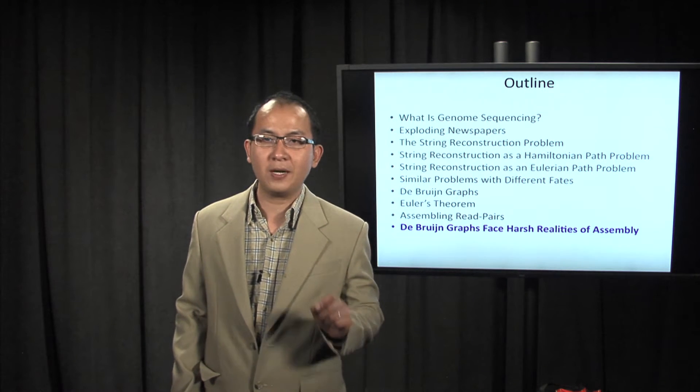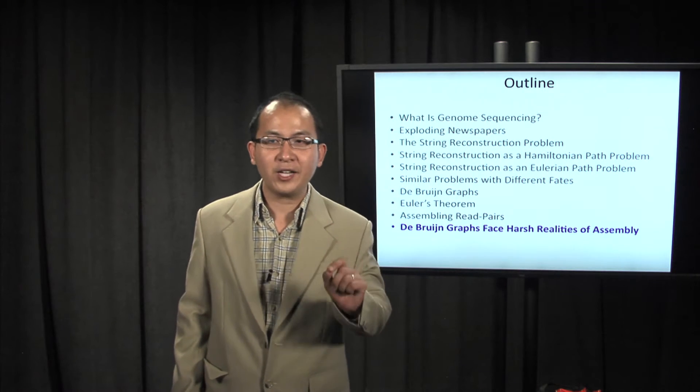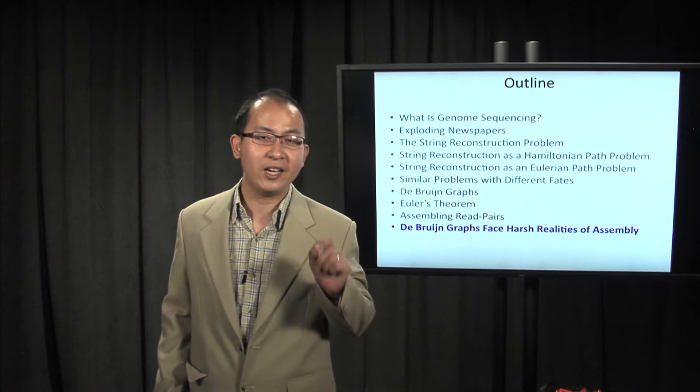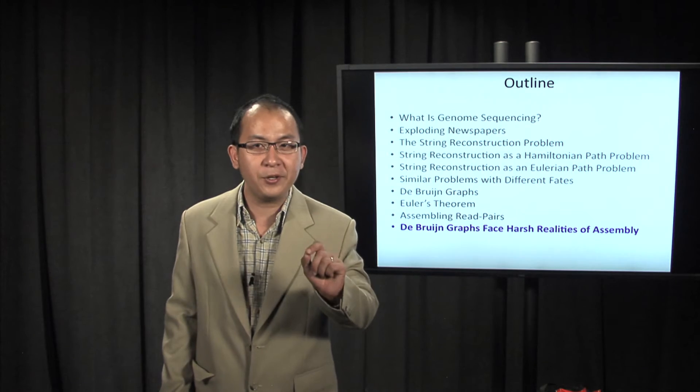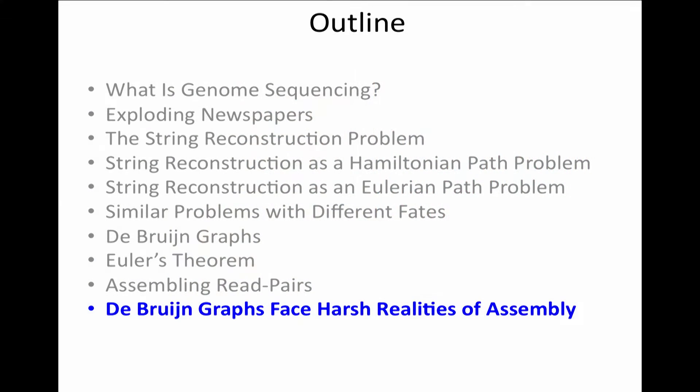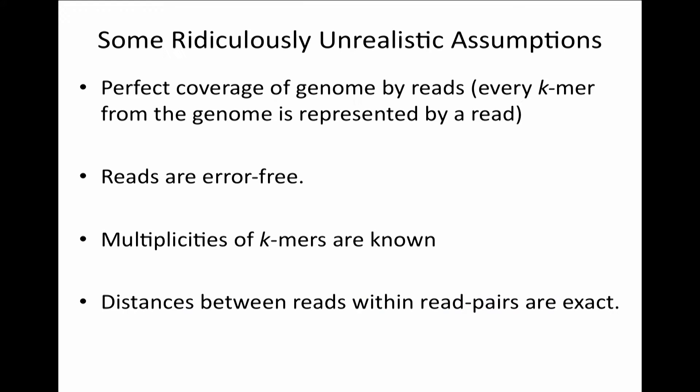Now I'm talking about the harsh realities of the assemblies, and how the de Bruijn graphs face these realities. During the course of the discussion, we have made some ridiculous unrealistic assumptions.